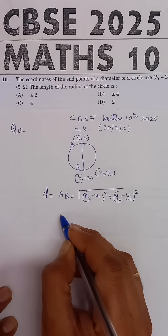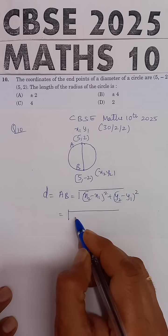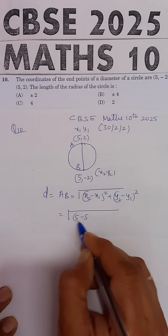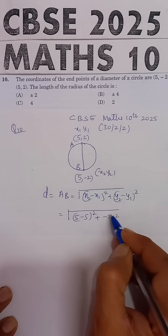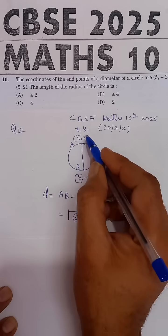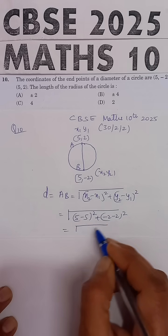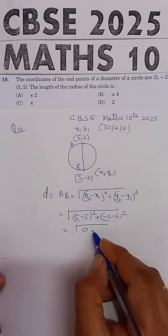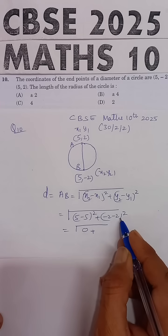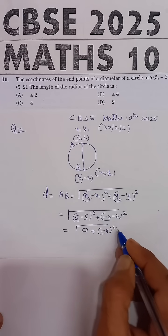So the distance will be: square root of (x2 minus x1) whole square. That's (5 minus 5) whole square, plus (minus 2 minus 2) whole square. This will be square root of 0 plus (minus 4) whole square.